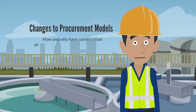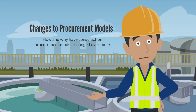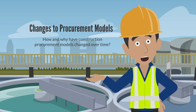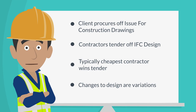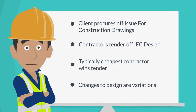Historically, the traditional procurement approach used by clients were construct-only models. The client would engage an architect or engineering consultancy to complete an Issue for Construction drawing set. The client then went out to market with the IFC drawings to select a contractor. Potential contractors would quote for this set of drawings, a contractor would be selected — typically based on the lowest price — and then works would begin. Any changes to the design would be a variation.